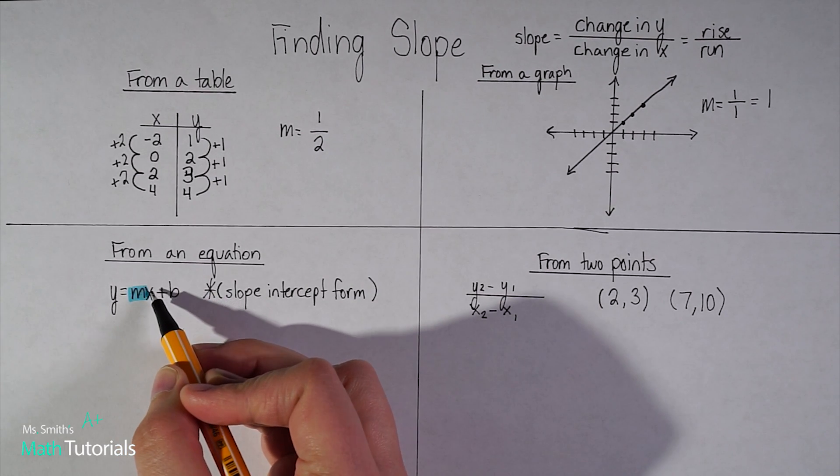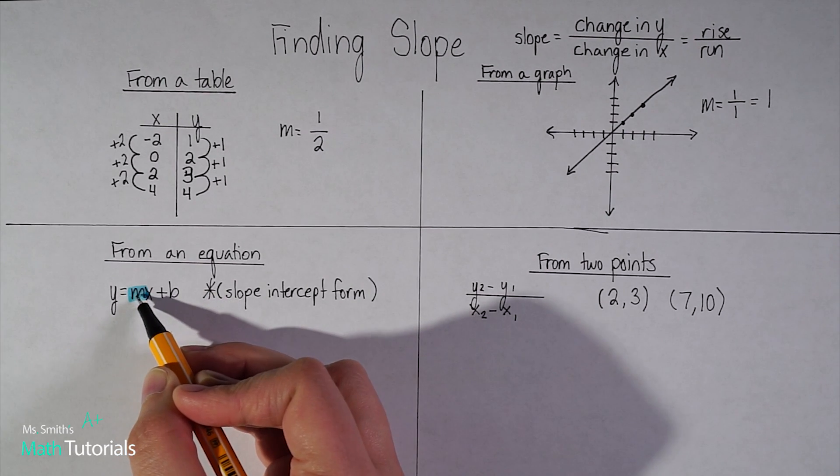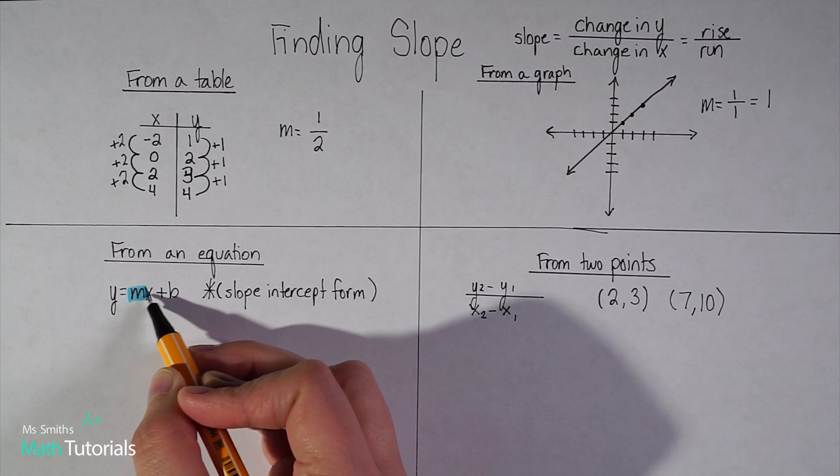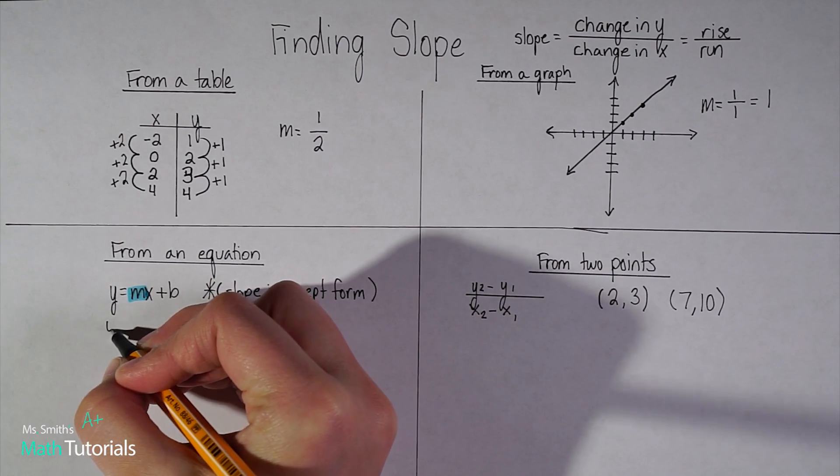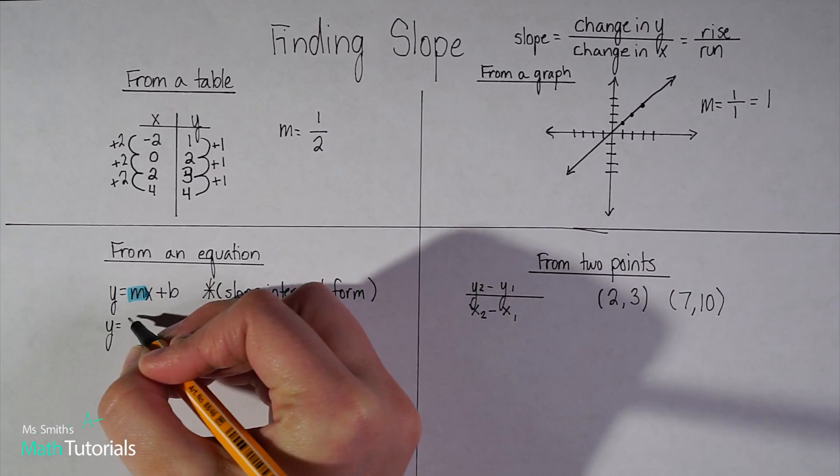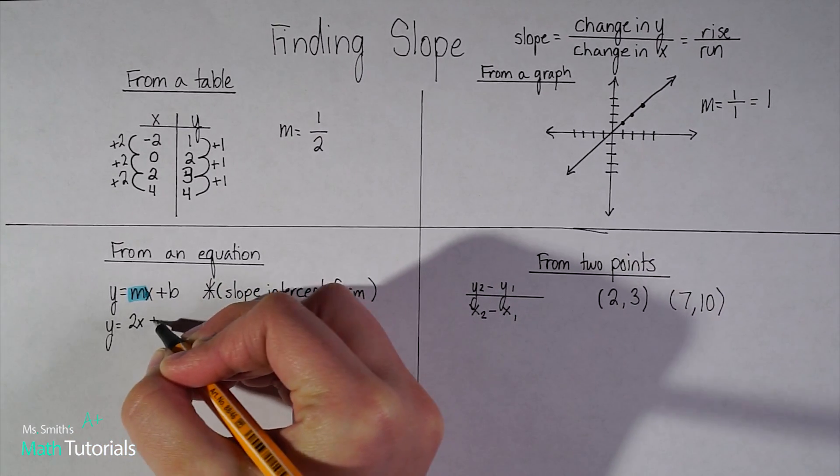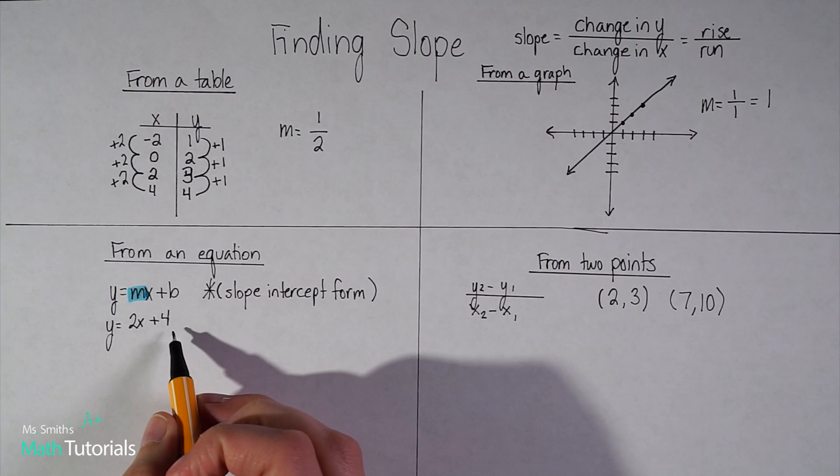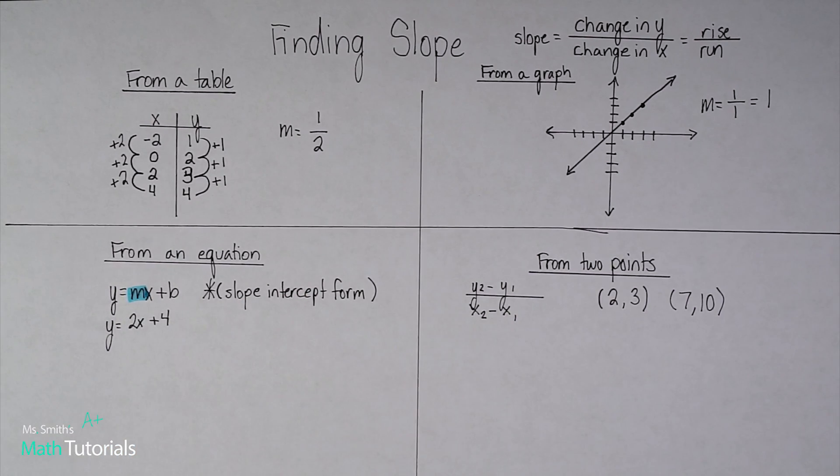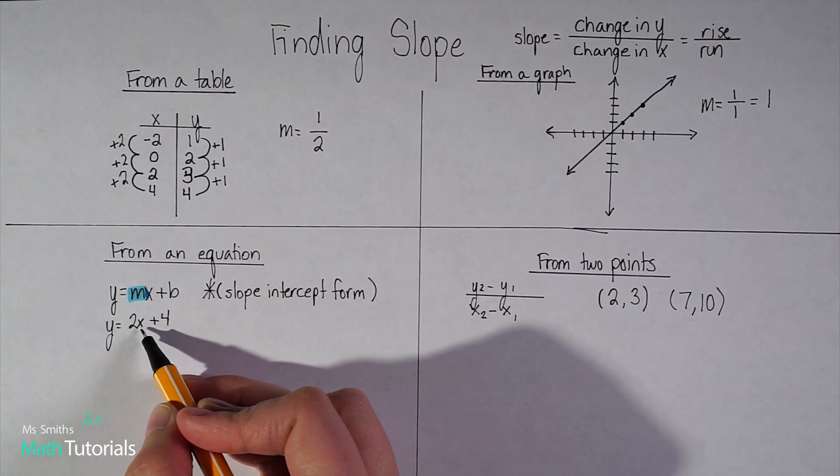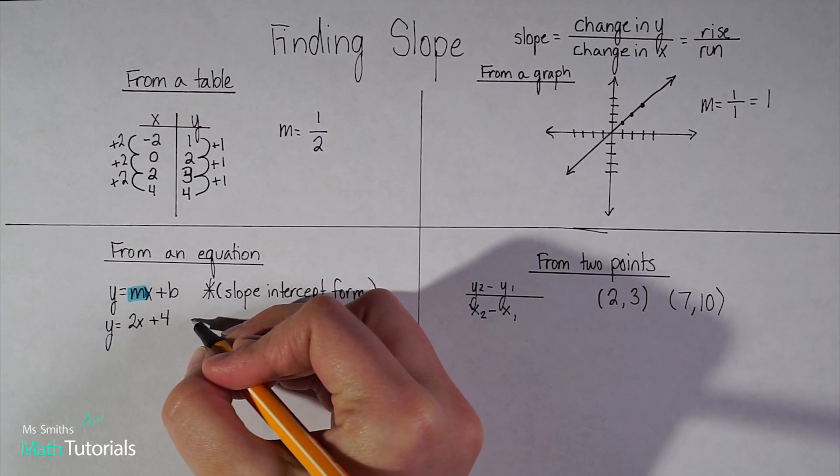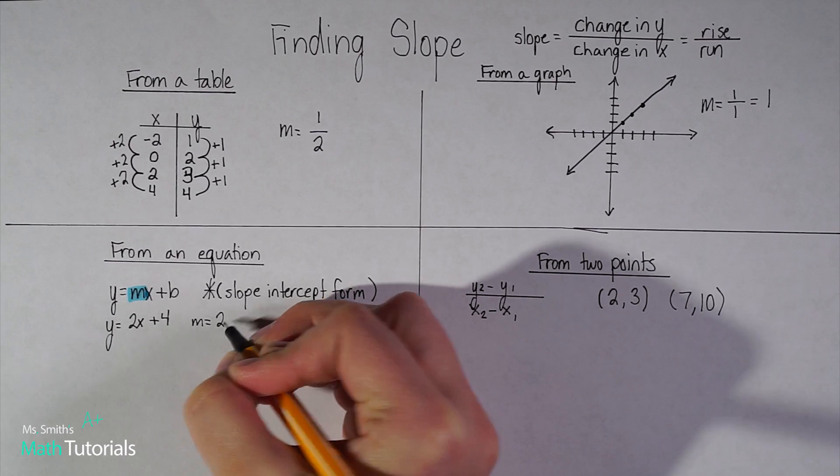Okay. m is the coefficient of x. So m, you know, pairs up with x. They're being multiplied by each other, but it doesn't include x. So for example, if I had y equals 2x plus 4, okay, this is in slope intercept form. And I would say the slope in this case would be 2. It's not 2x. It's just 2. So m would equal 2.